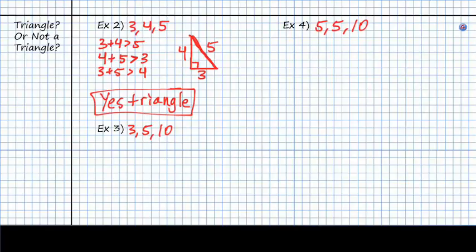So now let's do example 3. So we need to do 3 plus 5 is greater than 10. Well, that's false. That's not true. So we can automatically say that this is not a triangle.